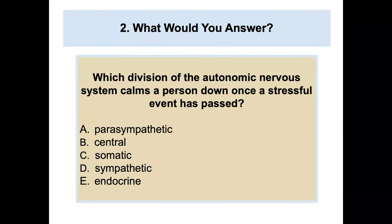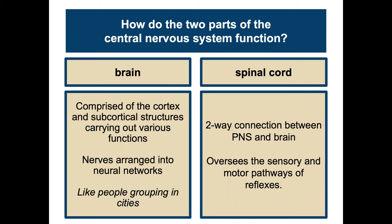Quiz: which division of the autonomic nervous system calms a person down once a stressful event has passed? The answer is the parasympathetic nervous system. Returning to the CNS — the brain and spinal cord — the brain is comprised of the cortex and subcortical structures. Nerves are arranged into neural networks, like people grouping in cities. The spinal cord is a two-way superhighway between the PNS and the brain, overseeing the sensory and motor pathways of reflexes.